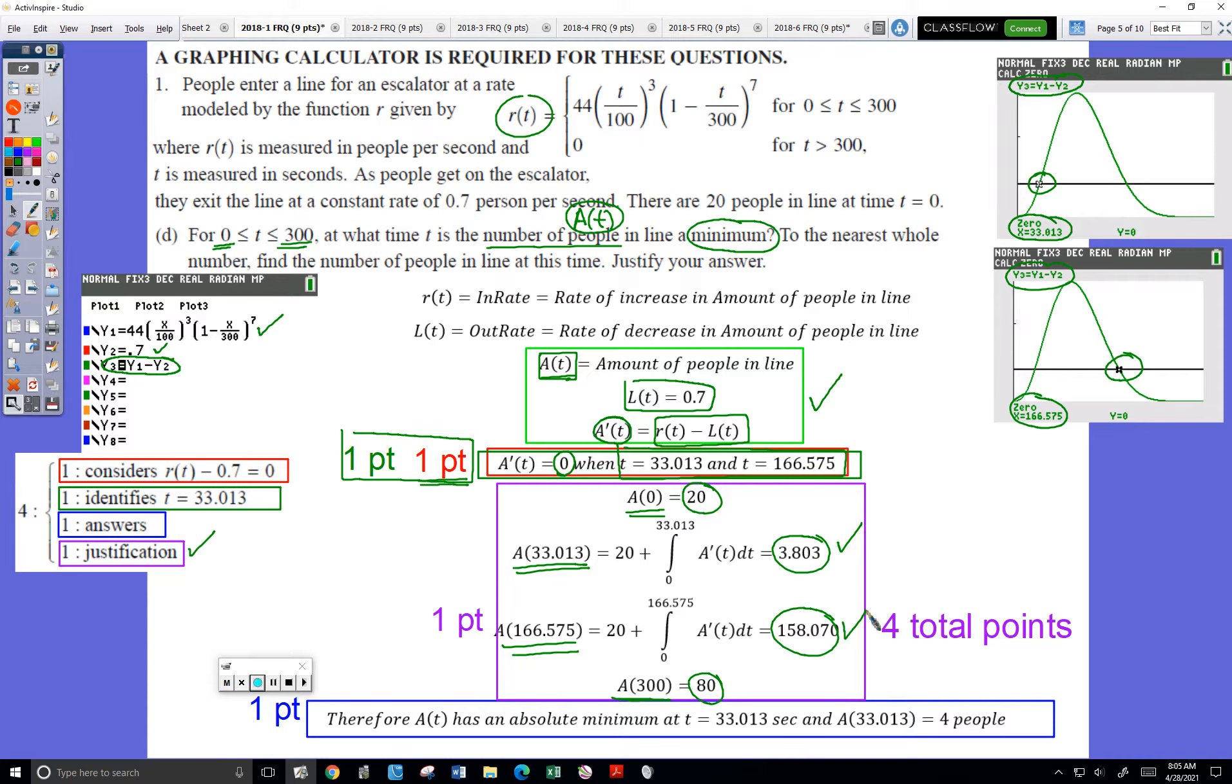I get one more point for simply stating the conclusion that A of T has an absolute minimum at this time. Make sure you answer the question. It says at what time, you have to answer it. You can't just show work. So I've got to have the blue box if I want that answer point.